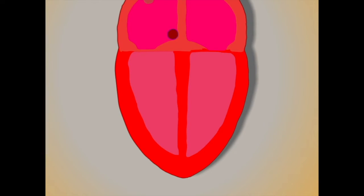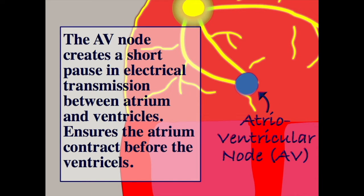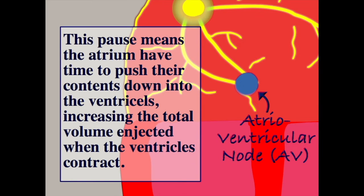The impulse is also transmitted through to the atrioventricular node, which I will refer to from here as the AV node. The AV node is responsible for passing the impulses down from the atrium into the ventricles. It also, crucially, slightly delays the transferring of the impulse from the top to bottom chambers. It is this slight delay that ensures the atrium have enough time to push all their blood down into the ventricles before they too contract, pushing the blood out of the heart and into the body.